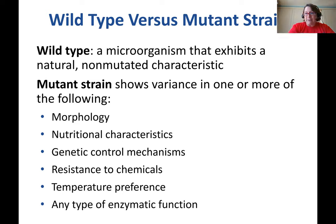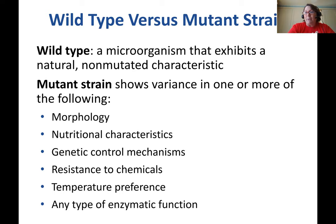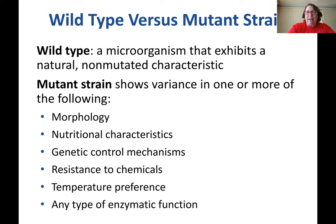Your book uses the term wild type and it is available in the literature, so you need to be familiar with it. A wild type is a microorganism that exhibits a natural, non-mutated characteristic. A mutant shows a variance in one or more characteristics compared to the wild type — such as morphology, some kind of shape or structure we can see, or nutritional characteristics. You may have mutant strains of bacteria that are either able to use a different nutrient or lose the ability to use a particular nutrient.